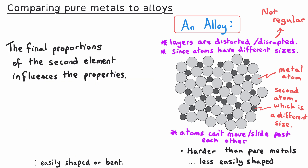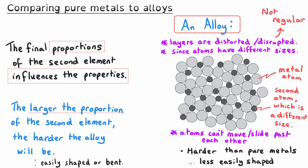The precise proportions of the alloy — in other words, how much of the extra element is added compared to the original element — will influence the properties the alloy has. For instance, the larger the proportion of this second element, the harder the alloy is likely to be and the less easily it will be shaped, which would make it more suitable for a particular use.